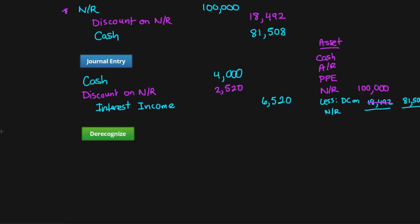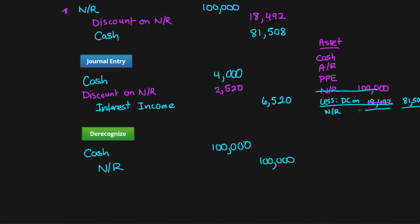When we de-recognize the note, we're going to receive our cash back — which is one hundred thousand — and the credit amount will be note receivable for a hundred thousand, since that is what is on our books. Then you won't have your note receivable account anymore, the discount will be completely erased, and you'll have your cash returned back to you.